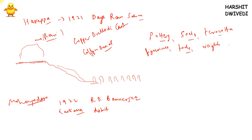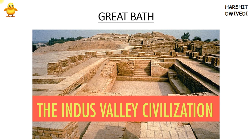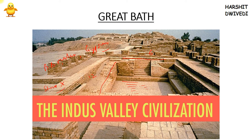In Mohenjo-daro, the Great Bath was found. It measured 6 by 12 meters. Burnt bricks were used on the floor, and mortar and gypsum were also used to construct it. One important factor to remember is that stone was not used in making the Great Bath — only burnt bricks, mortar, and gypsum.